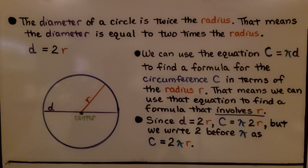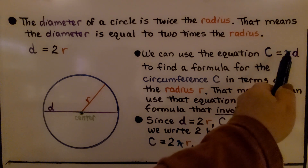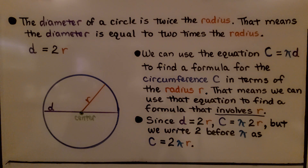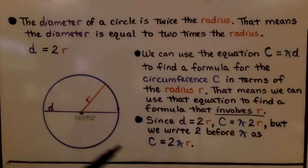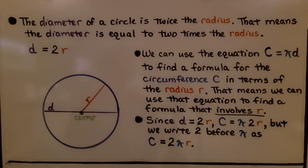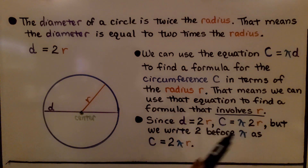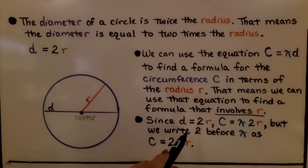The diameter of a circle is twice the radius. That means the diameter is equal to 2 times the radius, so d is equal to 2r. We can use the equation c equals pi·d to find a formula for circumference in terms of the radius r. Since d is equal to 2r, here's the diameter going straight across — the radius is just one of them, so we would have a radius and a radius length. Since d equals 2r, then c, the circumference, is equal to pi times 2r. This diameter is 2 radii.